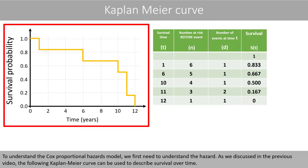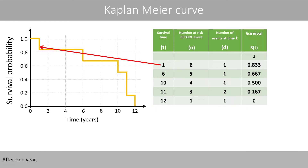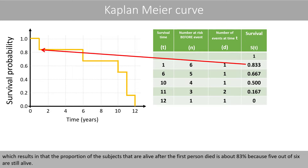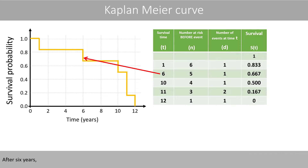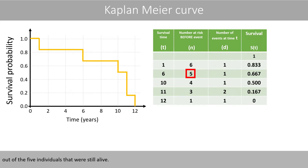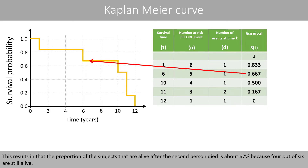As we discussed in the previous video, the following Kaplan-Meier curve can be used to describe the survival over time. After one year, one out of the initial six subjects died, which results in the proportion of subjects that are alive after the first person died being about 83%, because five out of six are still alive. After six years, another person died out of the five individuals that were still alive, resulting in about 67% alive because four out of six remain.